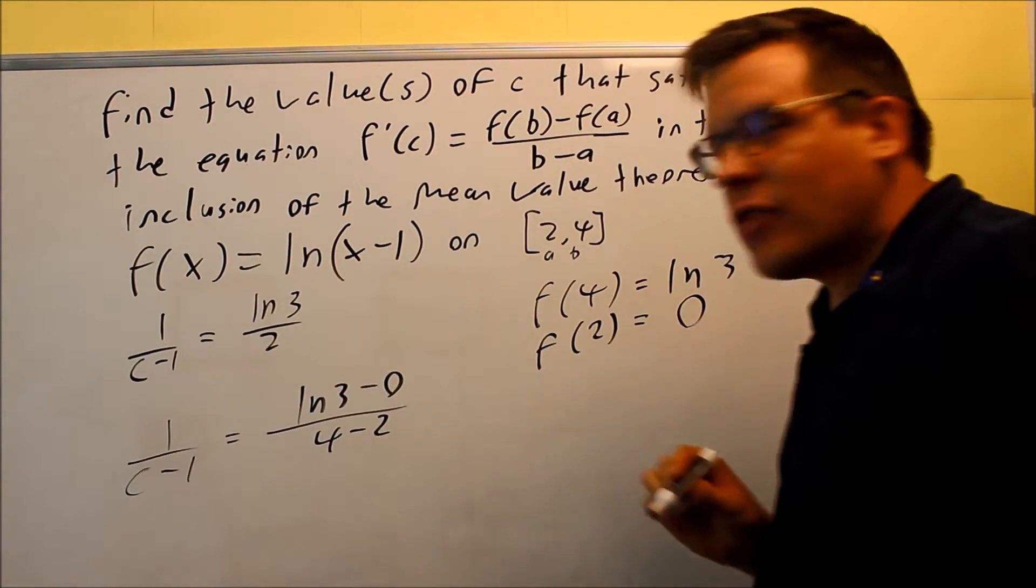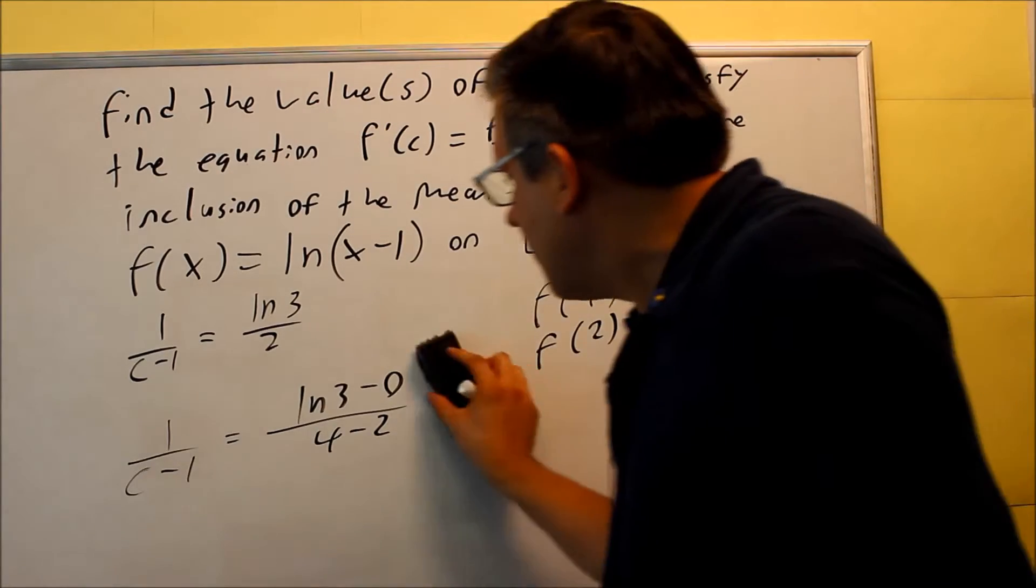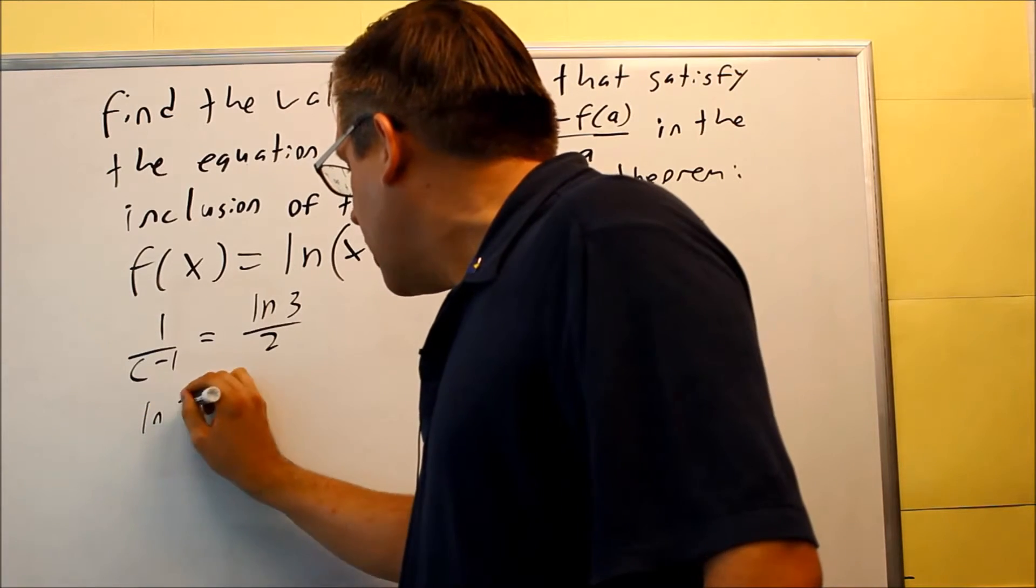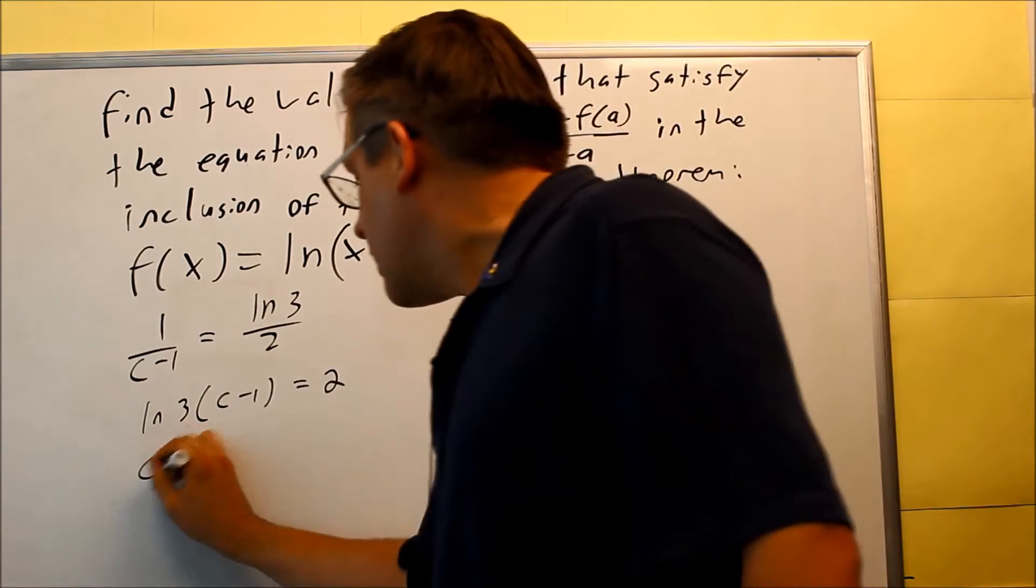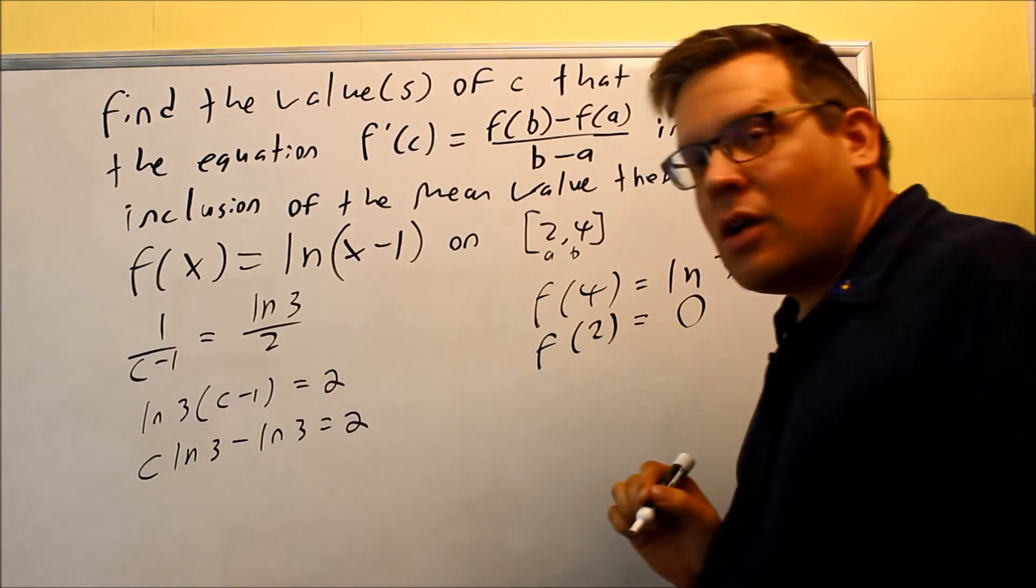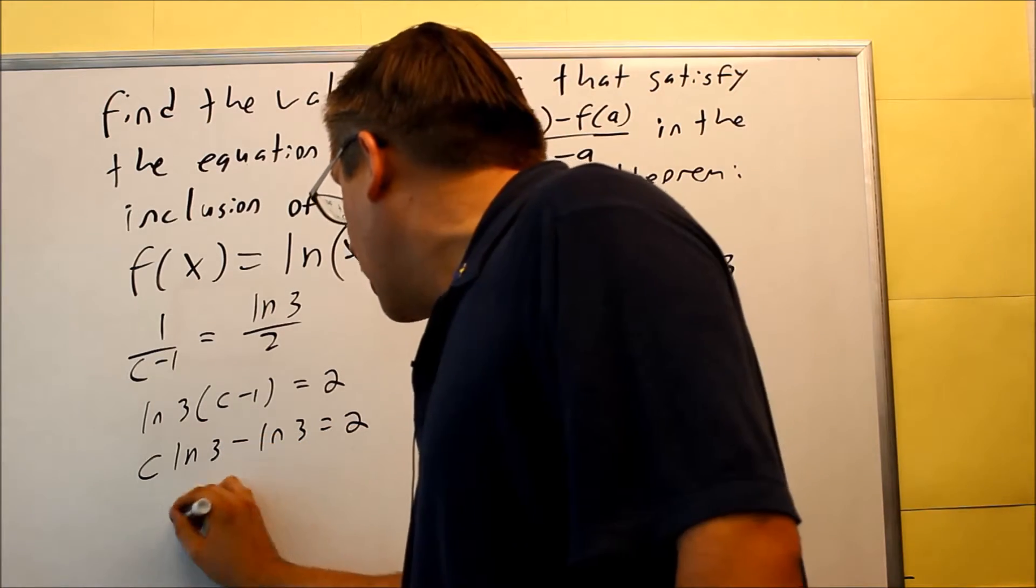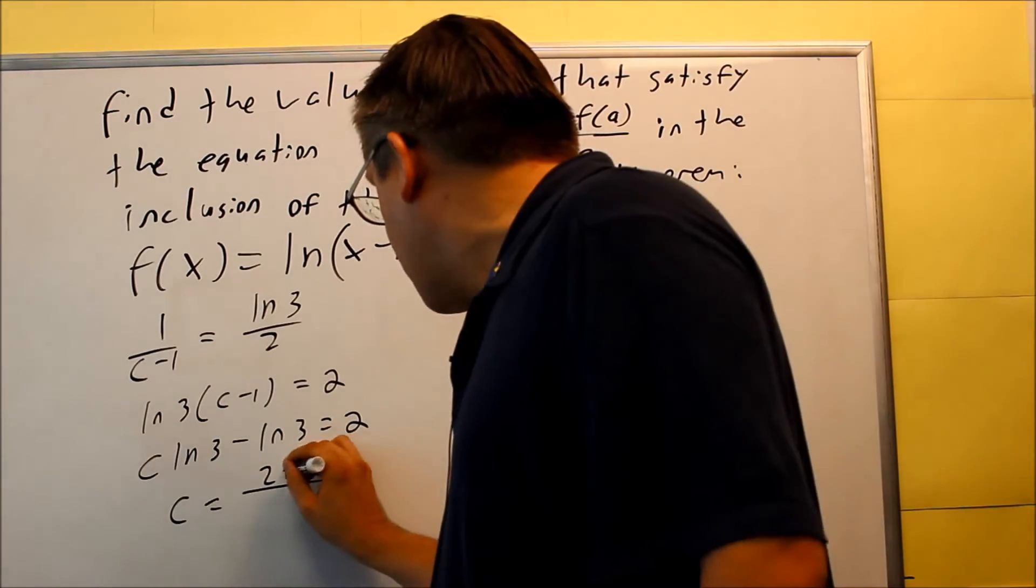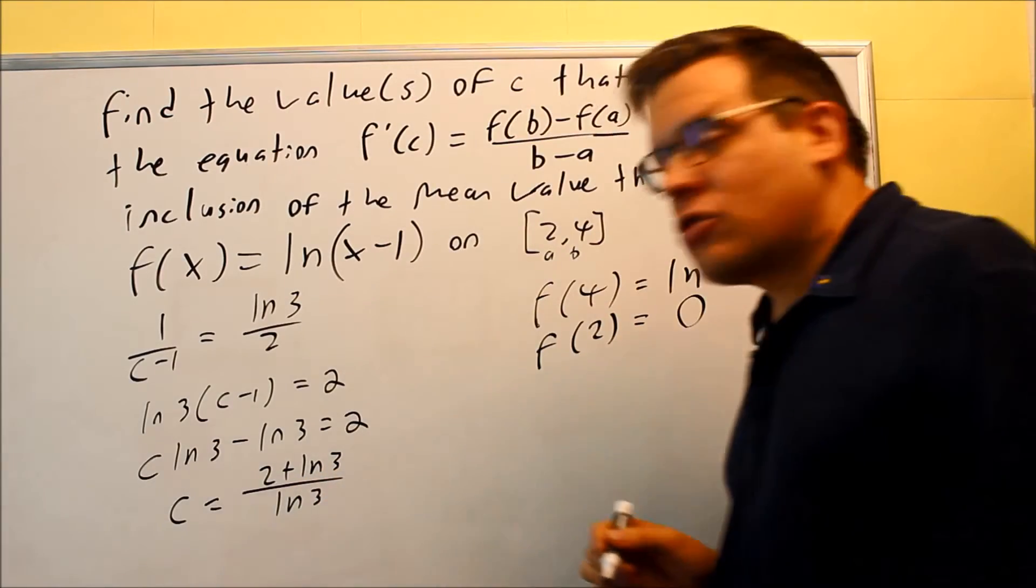Now I just need to solve that equation to find c. Cross multiply: ln(3) times (c - 1) equals 2. Distributing: c·ln(3) - ln(3) = 2. Solving for c: when you add ln(3) and divide by ln(3), you get c = (2 + ln(3))/ln(3).